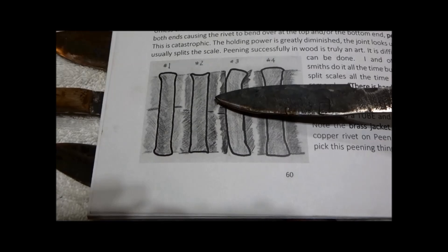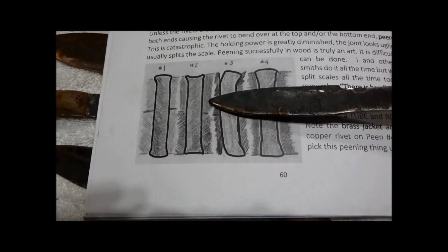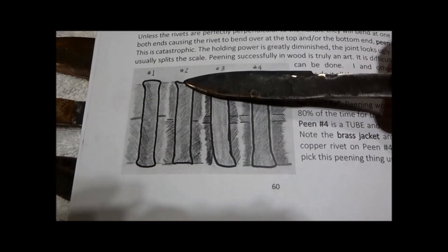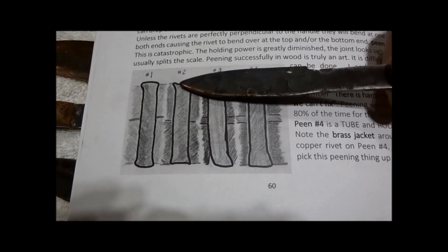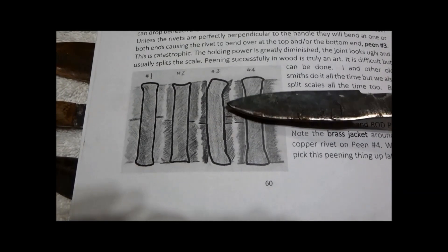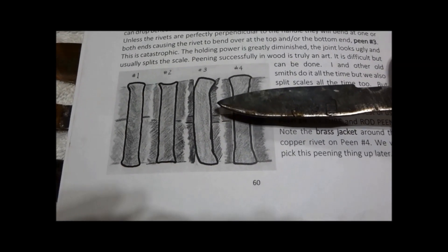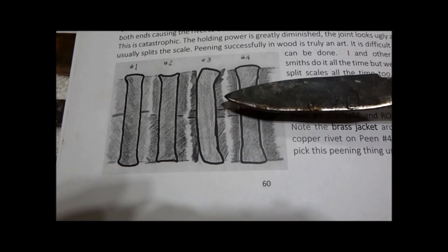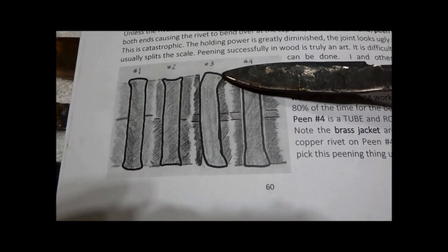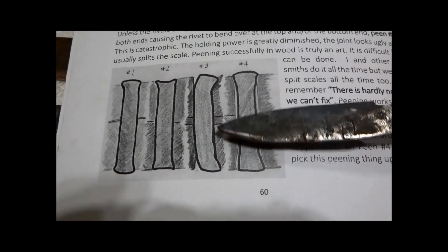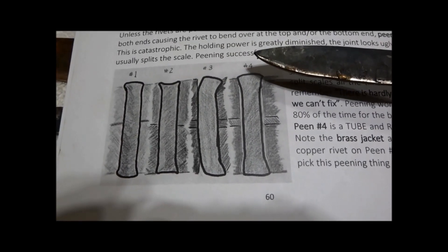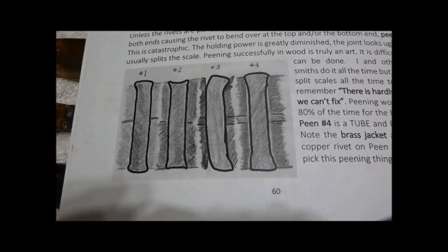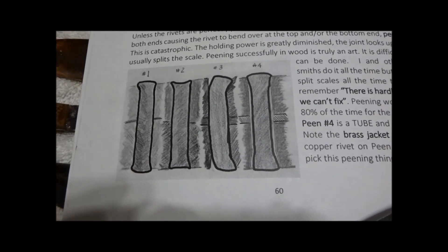However, with softer materials like bone and wood, the heads can recess, and that's a bad thing because it doesn't hold like it should. The worst thing that can happen, and it happens too frequently for most smiths, even experienced ones, is that the tops and the bottoms fall over. They get smooshed in the wrong direction. They don't stand up straight and tall, and it usually splits the scale.